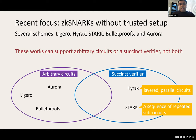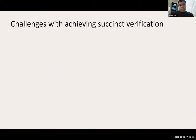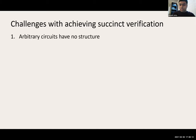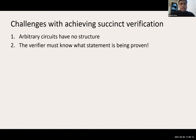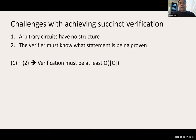In contrast with these works, Spartan can simultaneously achieve succinct verification and support arbitrary circuits. Achieving this is challenging because arbitrary circuits by definition have no structure, and the verifier must actually know the statement being proven — meaning verification must be at least linear in the size of the circuit.